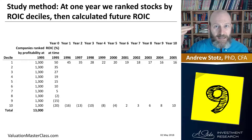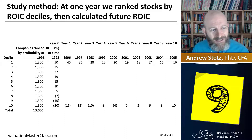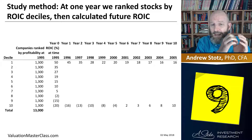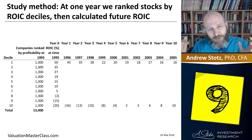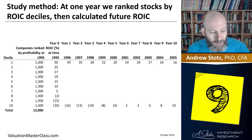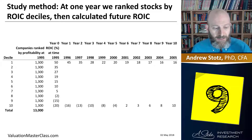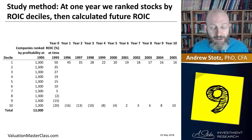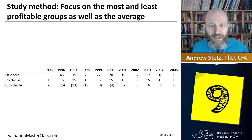What really matters to us is the highest and lowest deciles. Looking at decile number one: if we take this group of companies sorted in 1995 and hold them as a group, what happens to their return on invested capital over time? It goes from 50 to 45 to 35 to 28, all the way down to 16. At the other end of the spectrum, the worst companies at decile 10 start in 1995 at negative 20, then improve to negative 16, negative 13, and all the way to positive 10. So we're seeing a convergence happening.